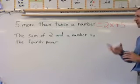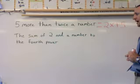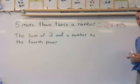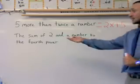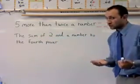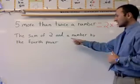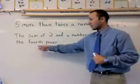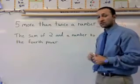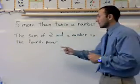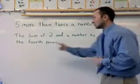Let's look at the second one. The sum of two and a number to the fourth power. Just like I told you before, that key word sum pops up, so I know that this is going to have addition. It's telling me a number to the fourth power, so I'm going to come up with a variable and put it to the fourth power. A number to the fourth power - I don't know what the number is because they didn't tell me, so I will make it x to the fourth power.